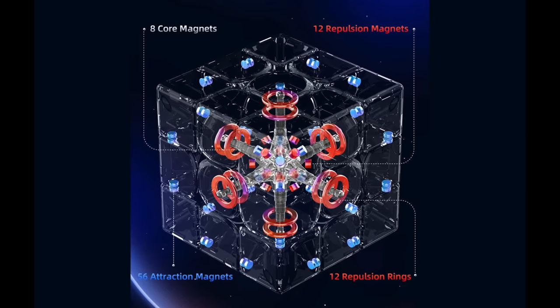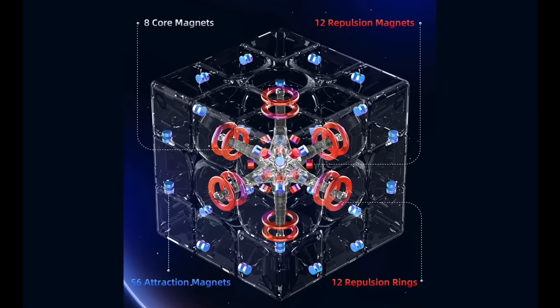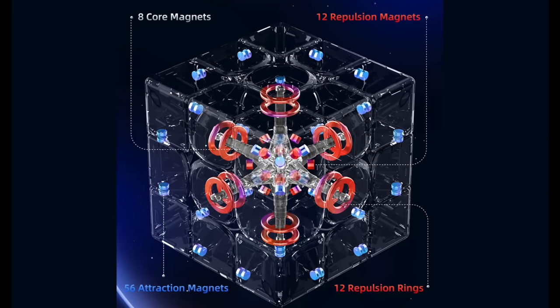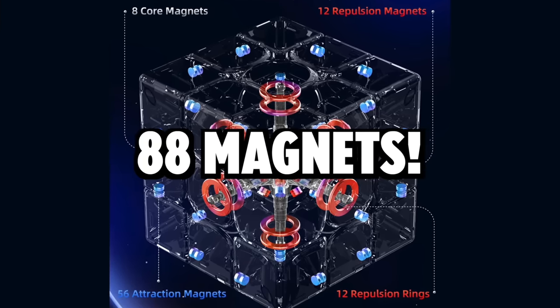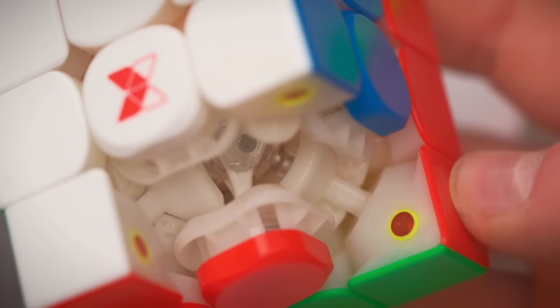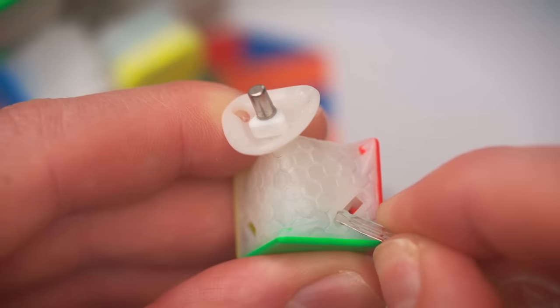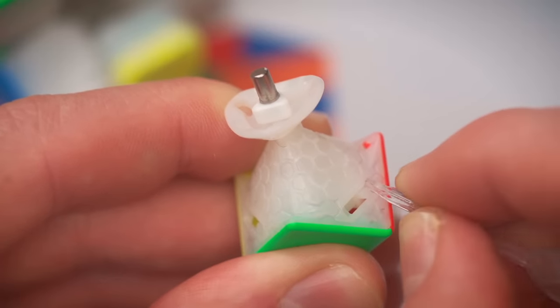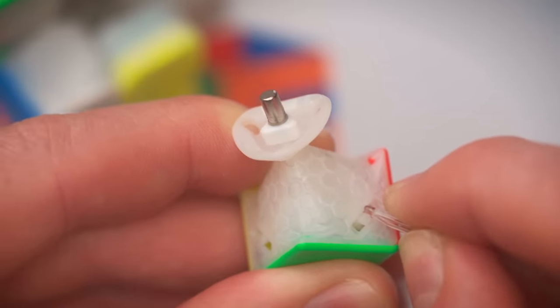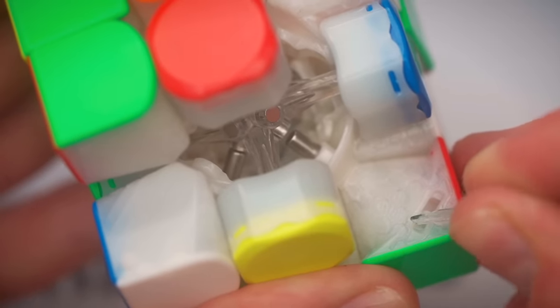So combining the corner edge magnets with the corner core magnets and the magnets that replace the spring, you have a cube with 88 magnets. You can find these magnets in most of the newest flagship cubes. And the best part of all is that GAN found a way to adjust the magnet strength using the magnets in the stem of the corners. So you only need 8 adjustments instead of 24.